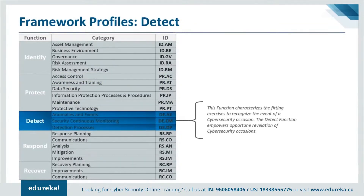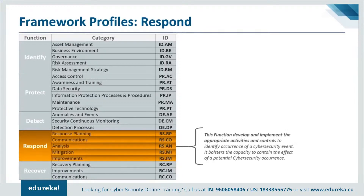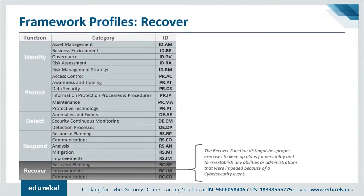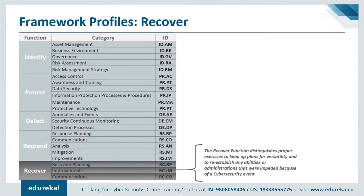The Detect function is used to develop and implement appropriate activities to identify the occurrence of a cybersecurity event. The Respond function supports the ability to contain the impact of a potential cybersecurity incident; outcome categories include response planning, communications, analysis, mitigation, and improvements. The Recover function is used to develop and implement appropriate activities to maintain plans for resilience and restore capabilities or services impaired due to a cybersecurity incident, supporting timely recovery to normal operations. Outcome categories include recovery planning, improvement, and communications.